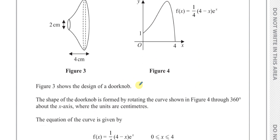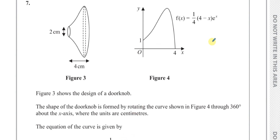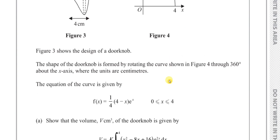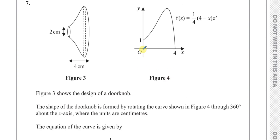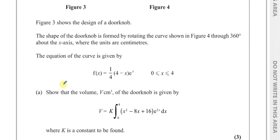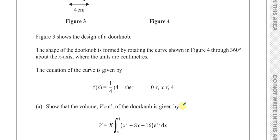The equation of the curve is given by a quarter times 4 minus x, times e to the power of x, where x is between 0 and 4. Show that the volume of the doorknob is given by v equals k times the integral between 0 and 4 of x squared minus 8x plus 16, times e to the power of 2x with respect to x, where k is a constant to be found.